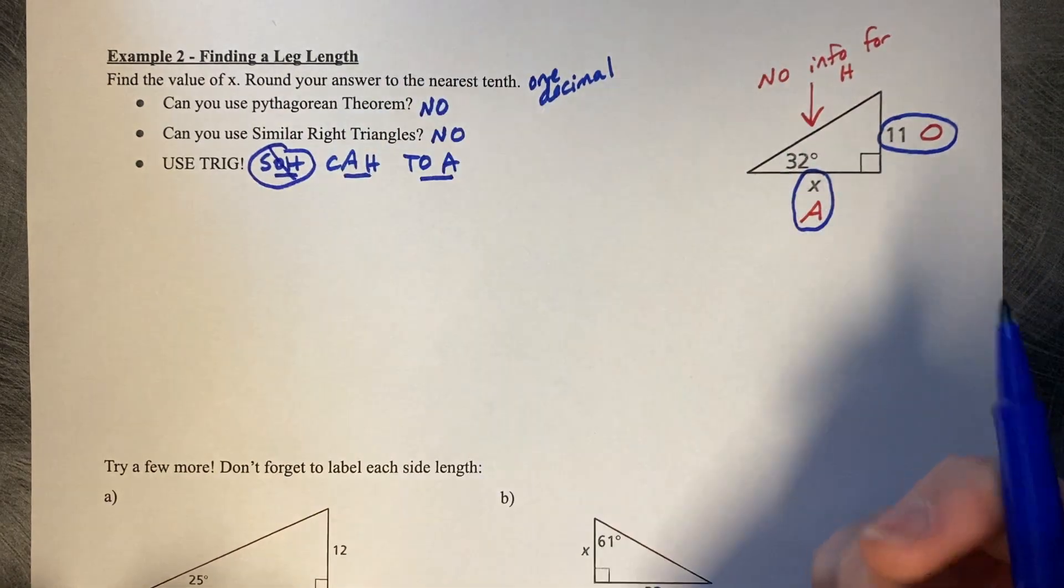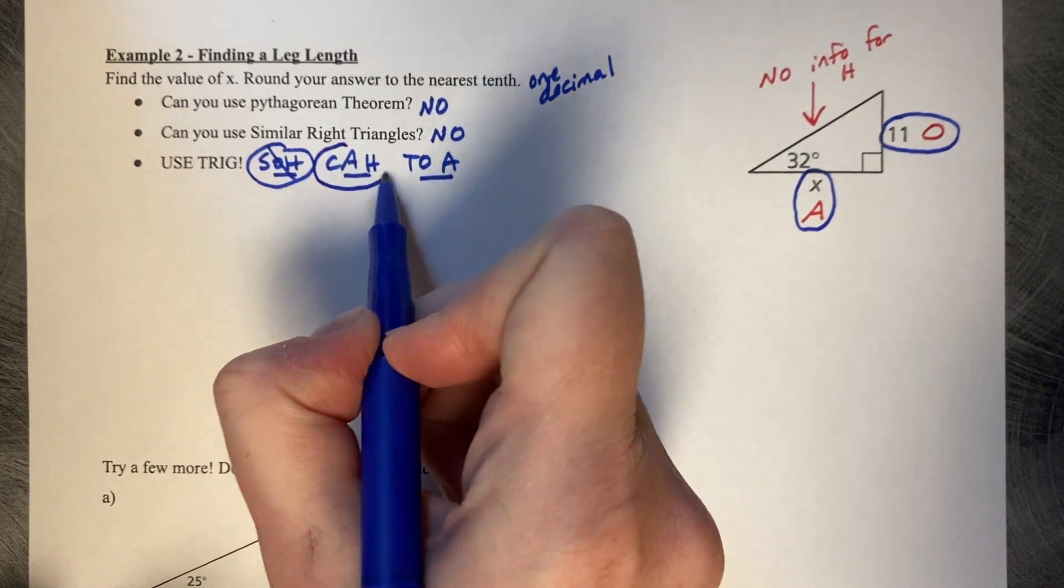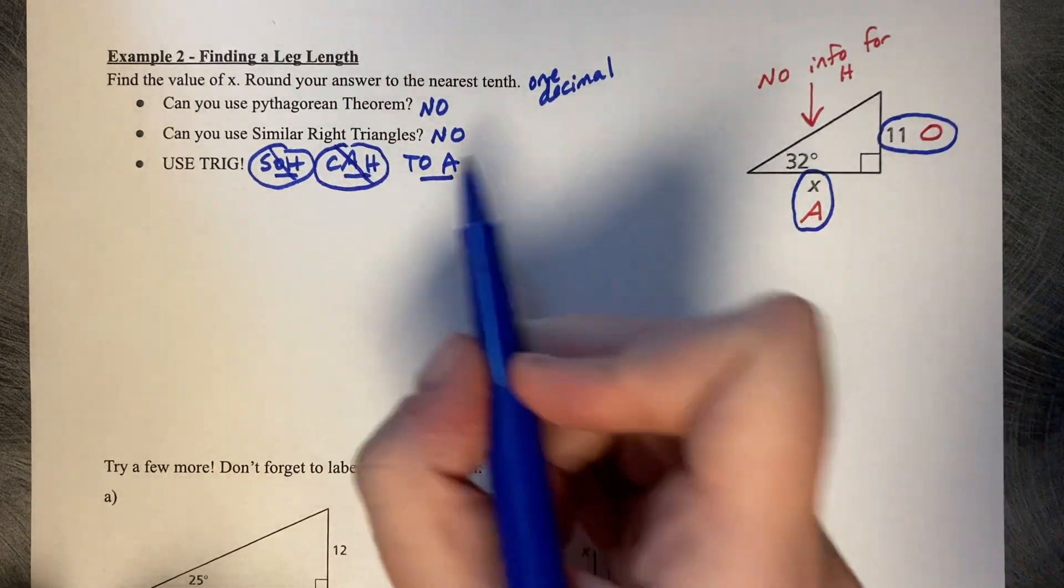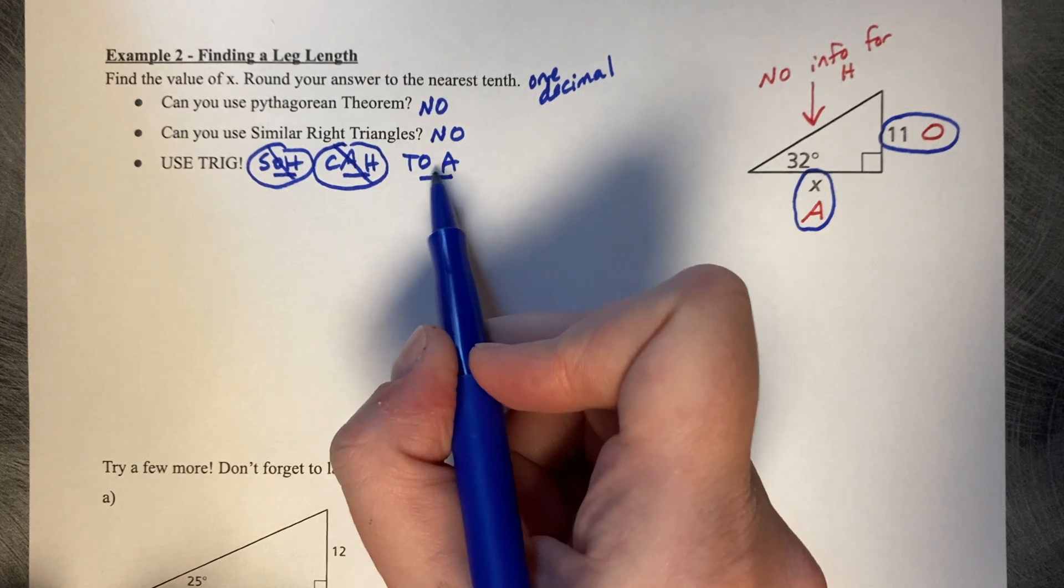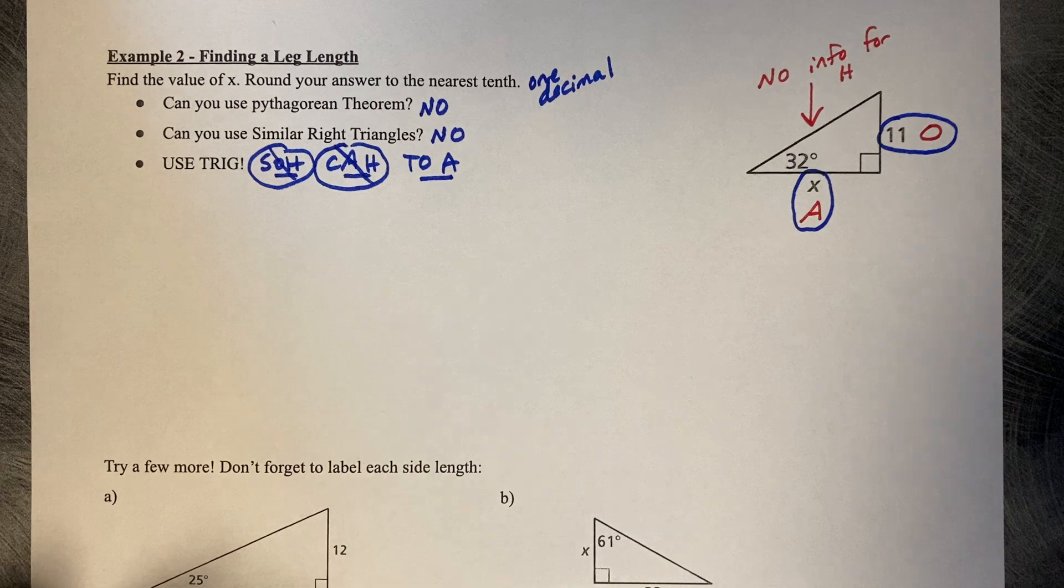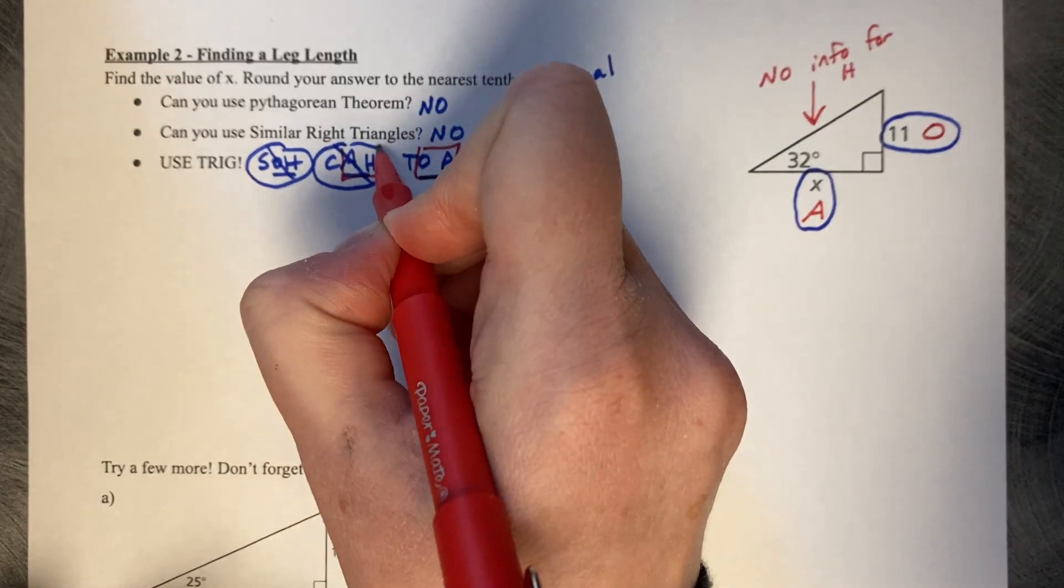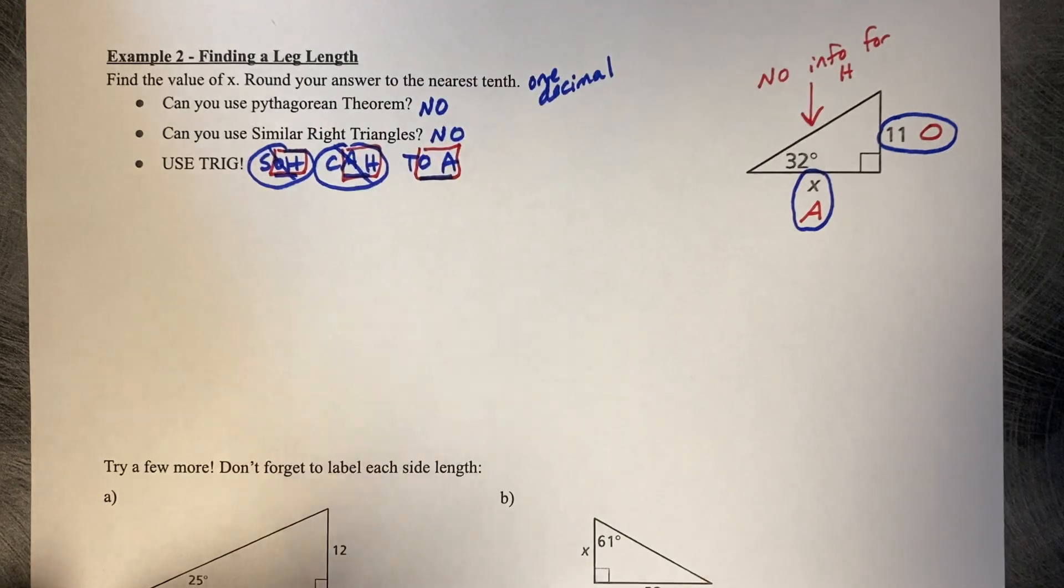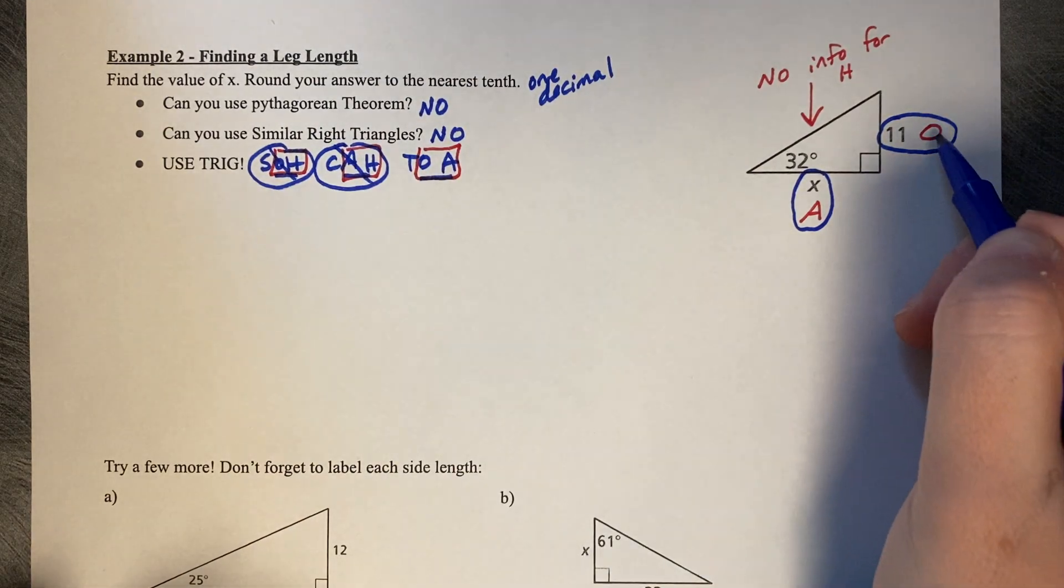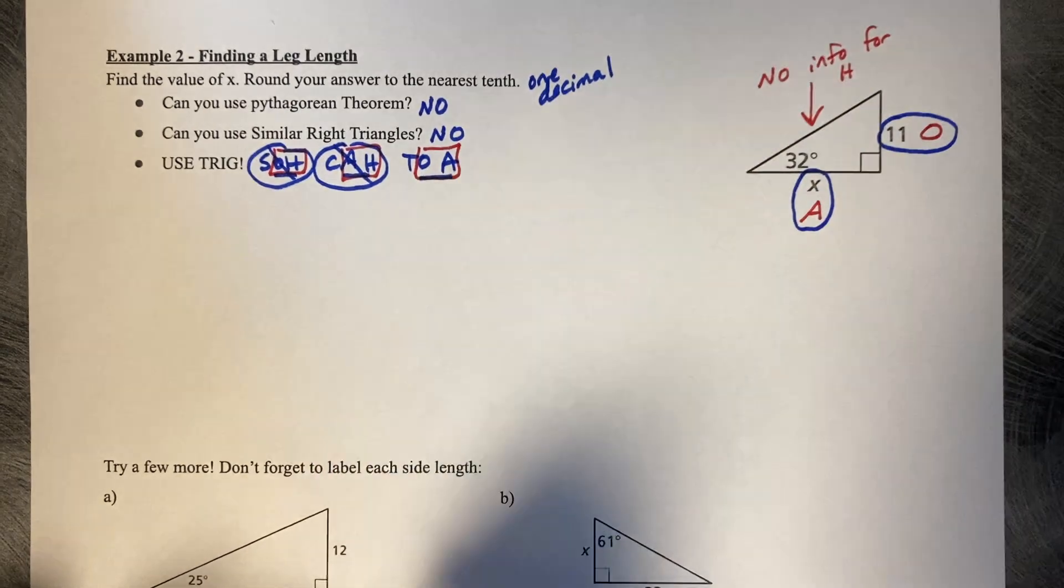Now look at your trig ratios. This one is O and H, so not this one. We don't need that one because it involves H. This one's A and H, we don't need that one. But this one is O and A. That matches. You're really looking at these second two letters in each of your trig ratios to determine which one to use. If you've circled your O and A, then you need to use the tangent ratio.